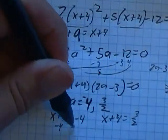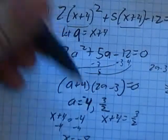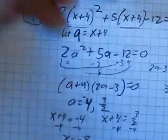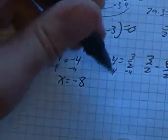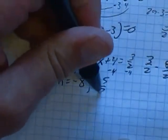So subtract four from both sides, x equals negative eight. Subtract four from both sides. Think about this for a sec. Three halves minus four. Four is eight halves, five halves. So that would be negative five halves.